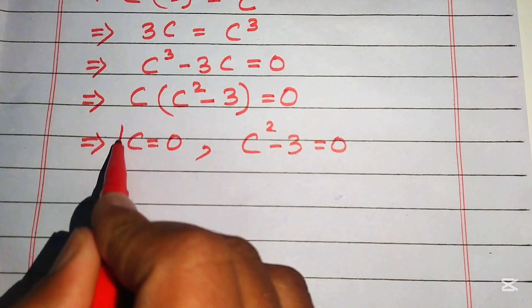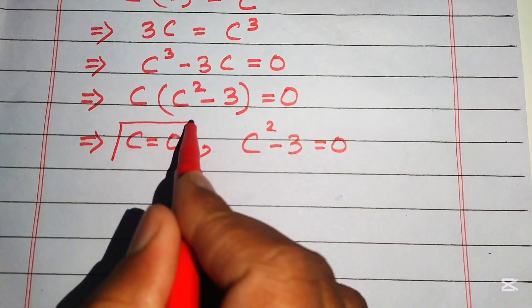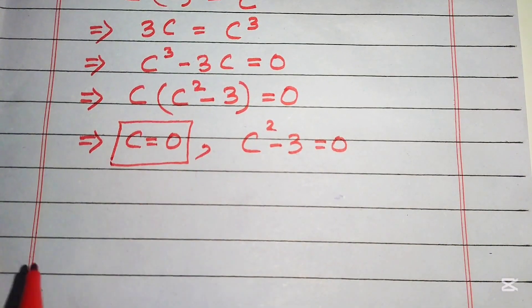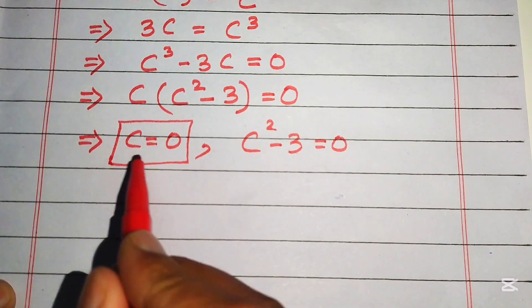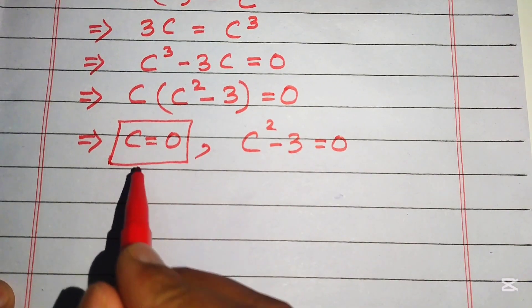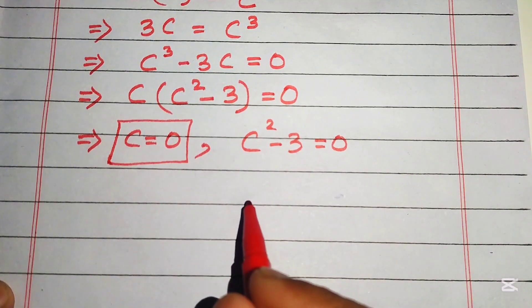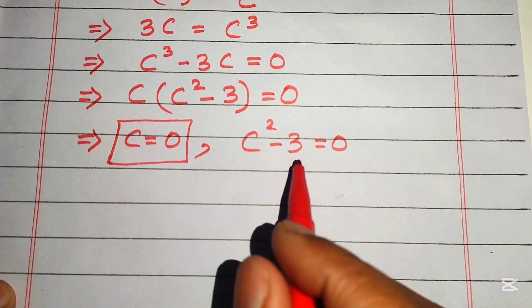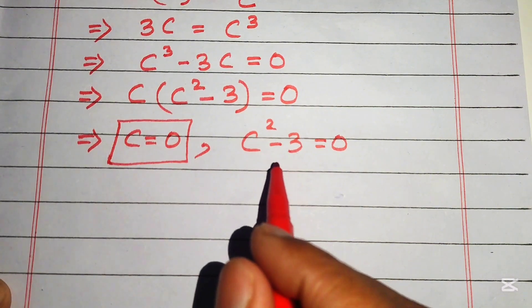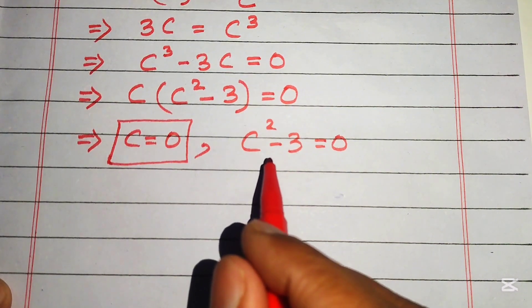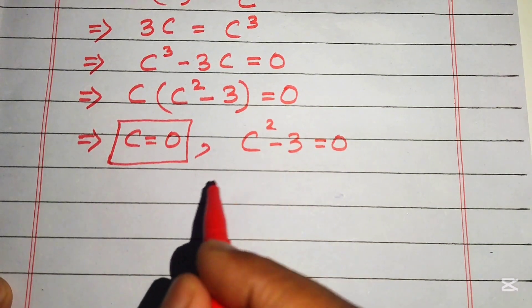The first root of the equation is c equals zero. To find the other roots, we solve the pure quadratic equation c squared minus three equals zero.